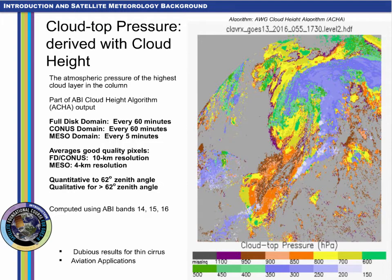Cloud top pressure, a baseline product also used in aviation, is derived simultaneously with cloud top height and cloud top temperature. It has 10-kilometer resolution at full disk and CONUS domains, where it is computed hourly, and 4-kilometer resolution in meso domains where it is computed every 5 minutes. Forecast model temperature profiles convert cloud top temperature to cloud top pressure and cloud top height.